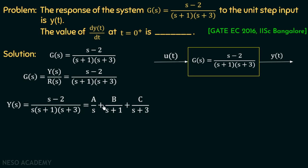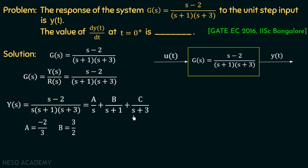To find A, substitute s=0: A = (0-2) / [(0+1)(0+3)] = -2/3. To find B, set s+1=0, so s=-1: B = (-1-2) / [(-1)(-1+3)] = 3/2. To find C, set s+3=0, so s=-3: C = (-3-2) / [(-3)(-3+1)] = -5/6.